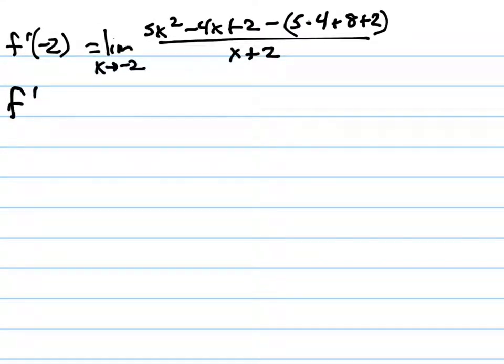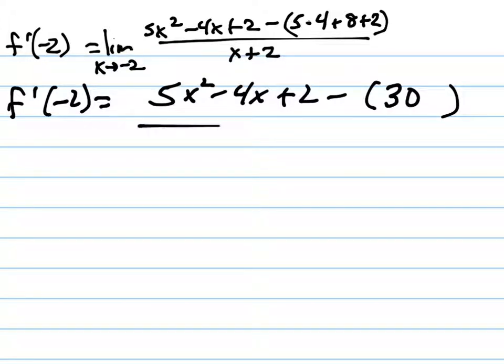Moving along, we have 5x squared minus 4x plus 2, minus this number in parentheses. So 5 times 4 is 20, plus 8 is 28, plus 2 is 30. So the value at negative 2 is 30, and I'm subtracting that. That's over x plus 2, and this is the limit as x approaches negative 2.